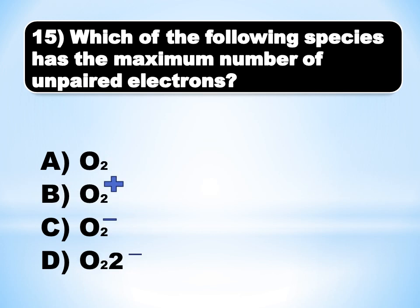MCQ number 14: Which of the following species has the maximum number of unpaired electrons? The answer is A (alpha), because of oxygen.